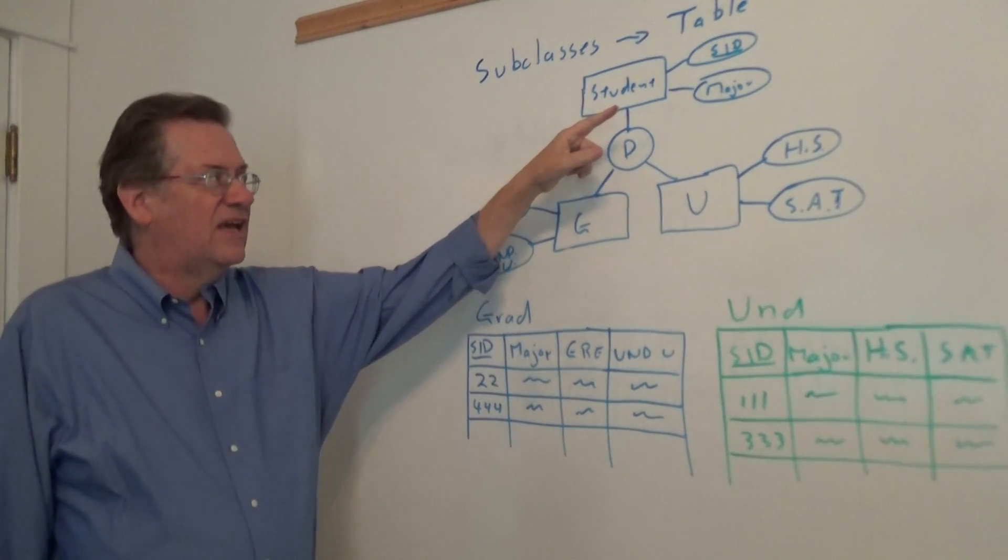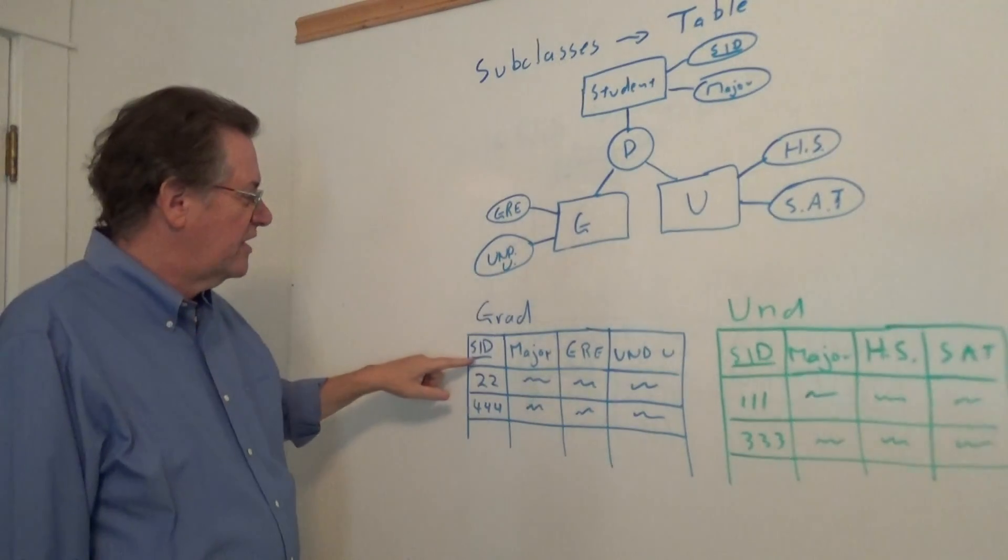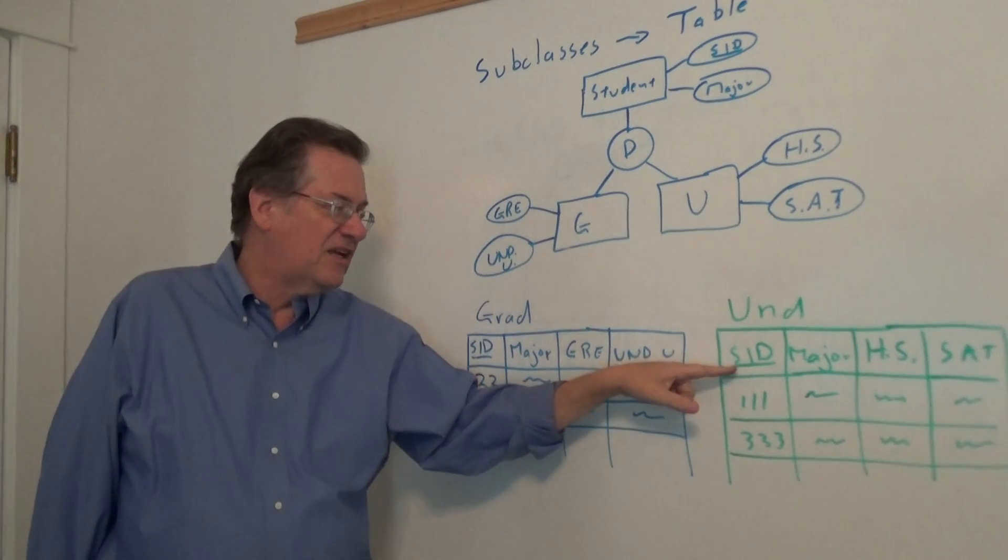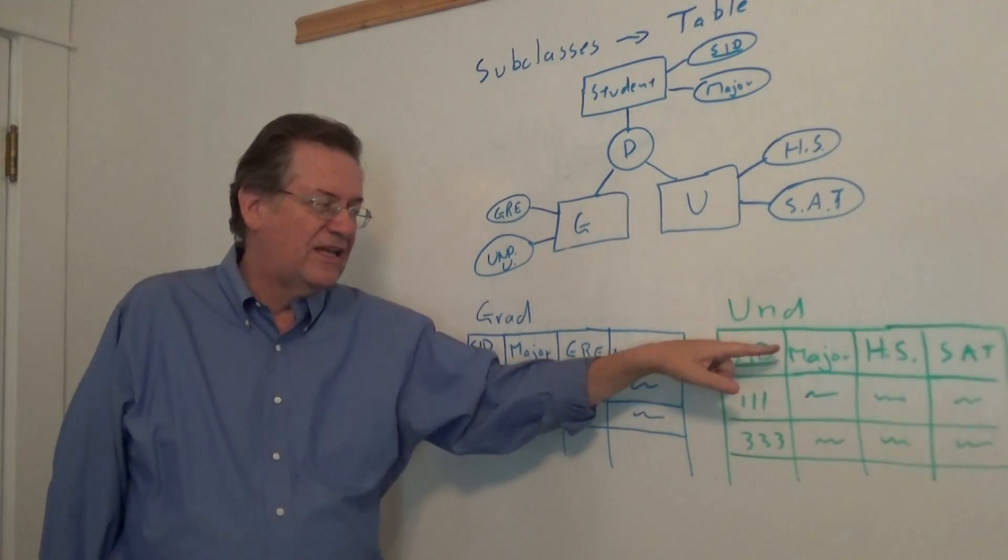We have student ID and major as common attributes to student so they show up here in the graduate table, student ID and major. They also show up in the undergraduate as student ID and major.